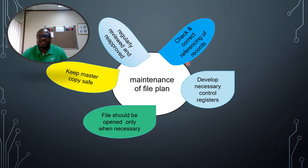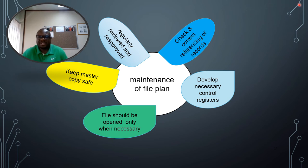When records come to the registry, you must take the file plan and verify whether the reference is correct. If it is not correct, you correct it. Normally this can be noted in your procedure manuals and policy — corrections can be made with a red pen, with the correct reference written on the top right corner of the record.